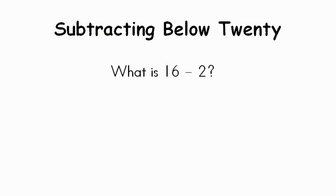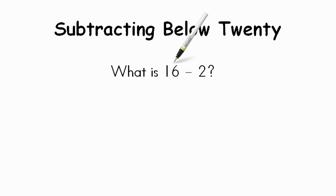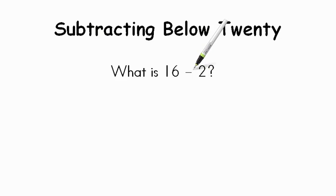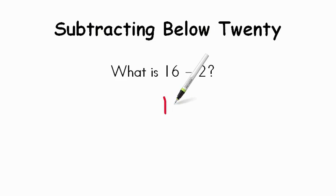Okay, let's try this one. What's 16 take away 2? Now you've got two strategies. You could count on from the smaller number up to the bigger number, but that's a big difference. So the strategy that might work best is to count back. If we count back from 16, then go to 15, and then to 14 — the answer is 14.